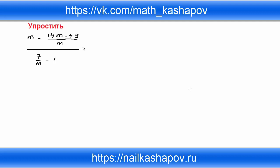Давайте для начала рассмотрим числитель и знаменатель по отдельности. Общая дробная черта — мы должны привести к общему знаменателю. Общий знаменатель числителя — это m. Значит, я должен m умножить на m, получается m квадрат, всё это делённое на m. Но так как перед дробью стоит минус, всё, что находится в дроби, меняет знак на противоположный.